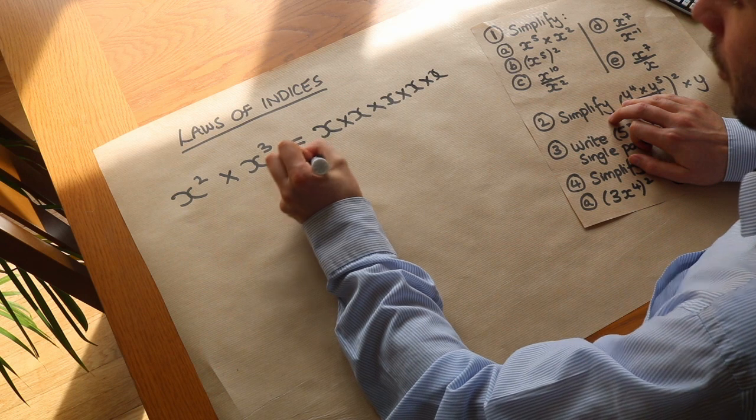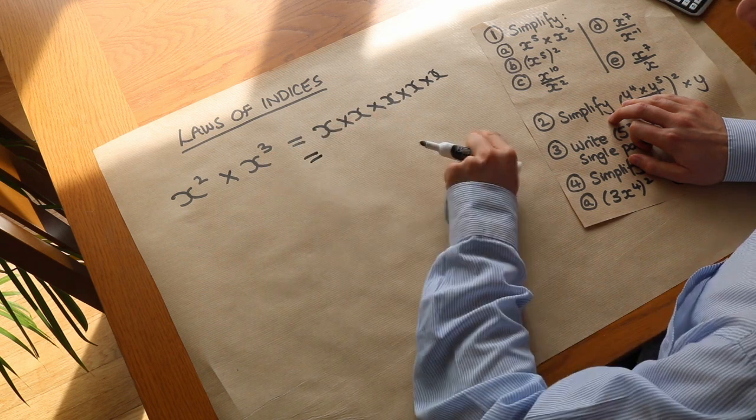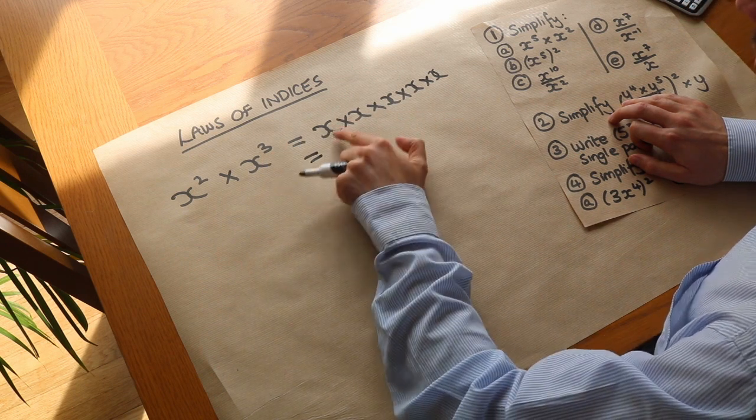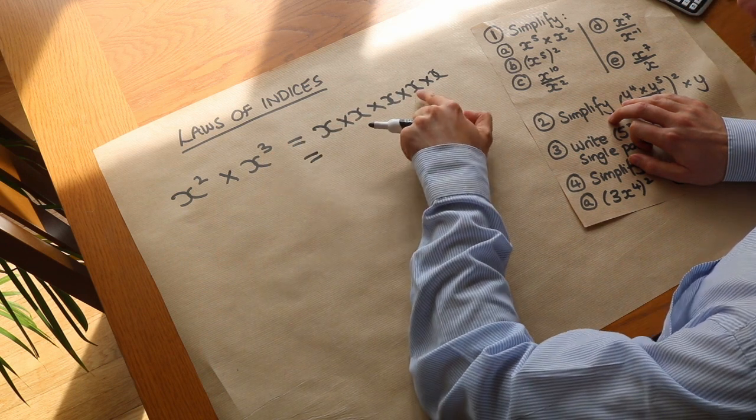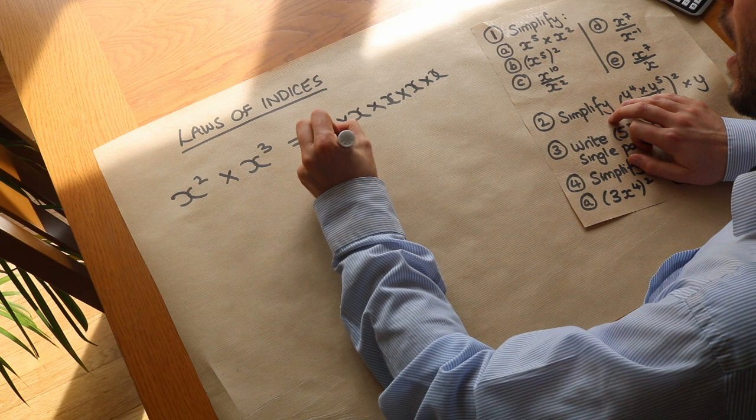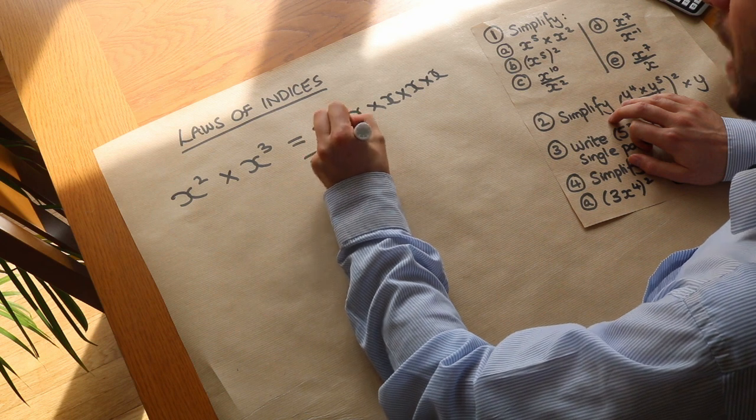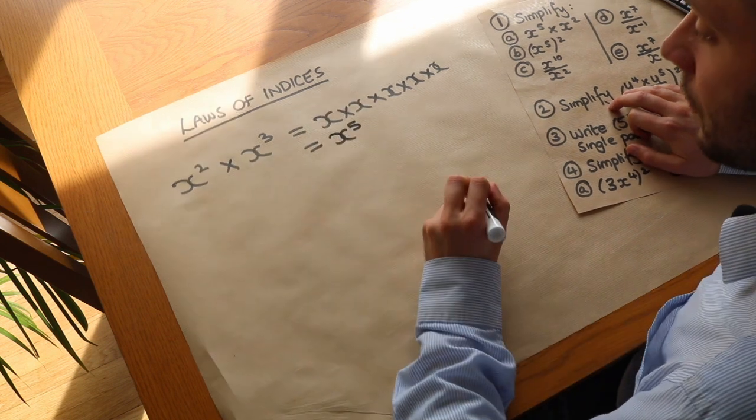Now how many x's are we multiplying together? One, two, three, four, five. So we get x to the power of five.